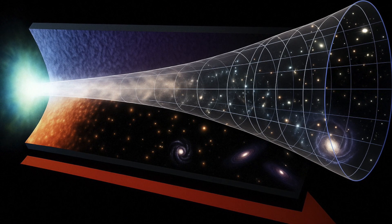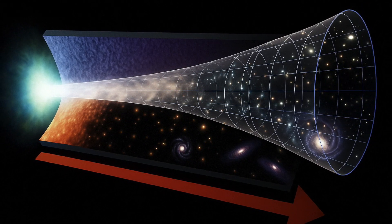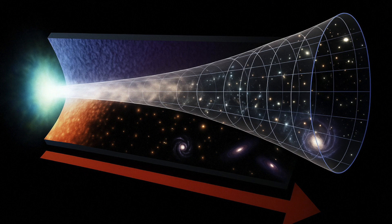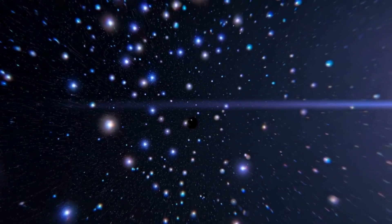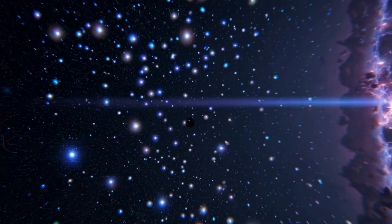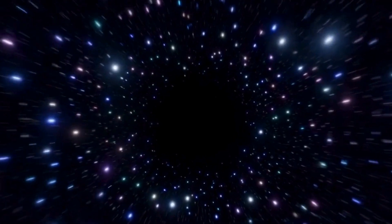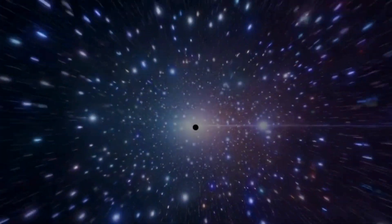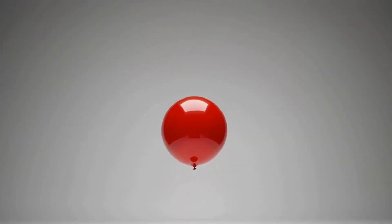Dark energy is a strange force that causes the universe to expand faster and faster every second. We can't see or measure it directly, which is why scientists call it dark. It doesn't interact with light in any way. We only know it's there because of its effects, like how galaxies are rapidly moving away from one another. In other words, something is out there, but we have no idea what it is. We can only trace its footprint.